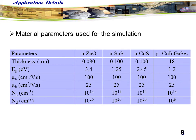The material parameters used for the simulation are summarized in the table: the thickness of each layer, band gap energy, mobility of electrons and holes, concentration of acceptors and donors.